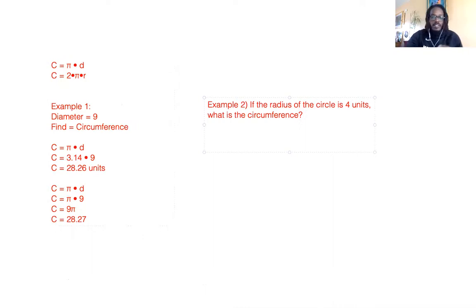Example two says if the radius of the circle is four units, what is the circumference? So again, I'm going to have to go back over here into my corner where I see my formulas. And I'm going to think about which formula has what I'm looking for. And one of the things that I know: I see circumference equals pi times diameter. And though this is a formula that helps me find circumference, it doesn't include radius, which is what I have in example two. So instead I'm going to use this formula that is circumference equals 2 pi r.